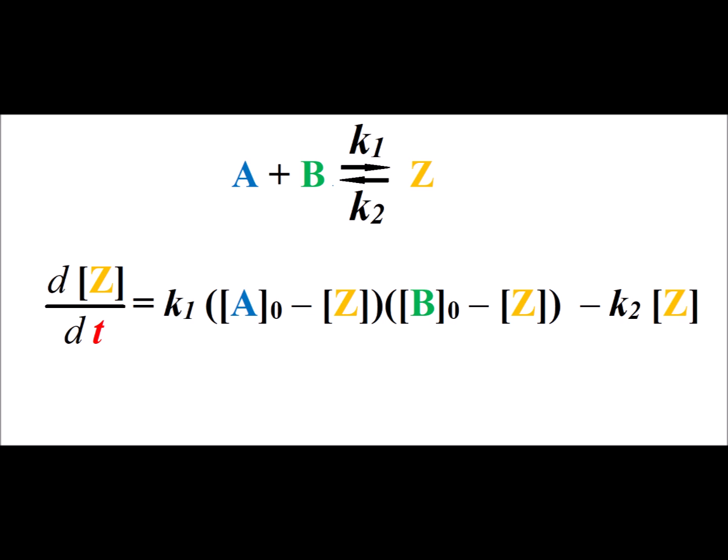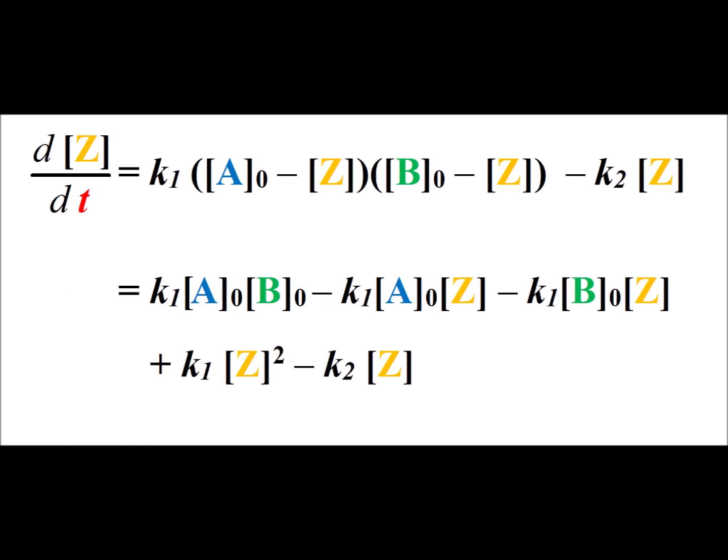If we now make the substitution for the current concentration of a and the current concentration of b and substitute it into our expression, we get a new version of the change in the concentration of z per unit time in terms of the initial concentrations of a and b. We then simplify by using the FOIL operation to remove the parentheses.